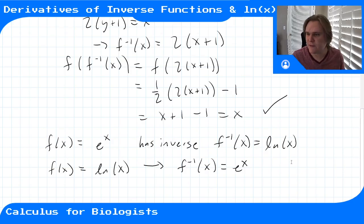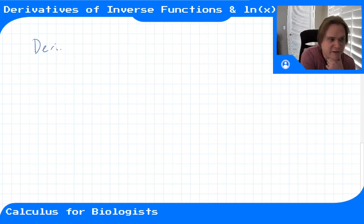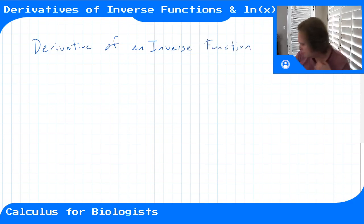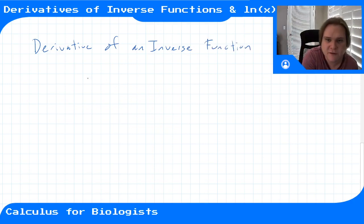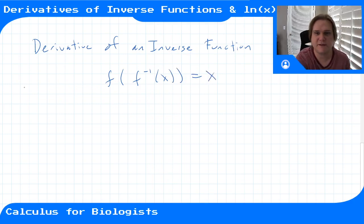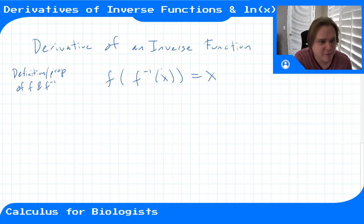So let's compute the derivative of an inverse function. We're going to use a trick: we start with f applied to f inverse of x is equal to x. This is the definition — or a property — of f and f inverse. If you compose them, you end up with x. But now that we know the chain rule, we can take the derivative of this composition.